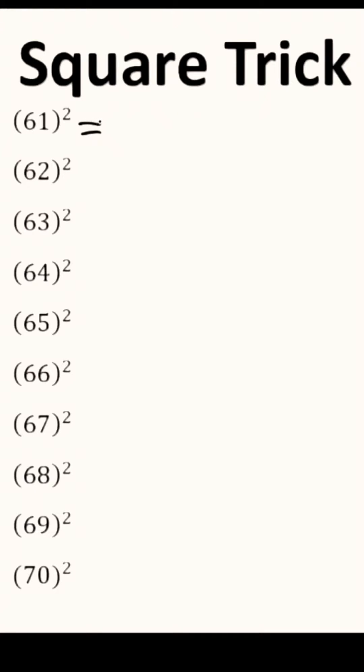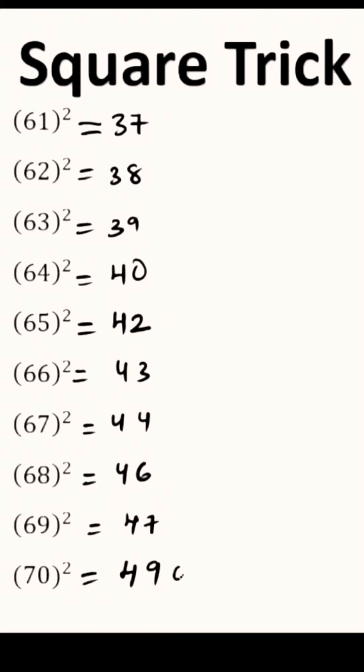So let us find out the square of 61. First you need to write down 37, 38, 39, 40, leave 41, write 42, 43, 44, leave 45, write 46, 37, leave 48, write 49, and write down 2 zeros.